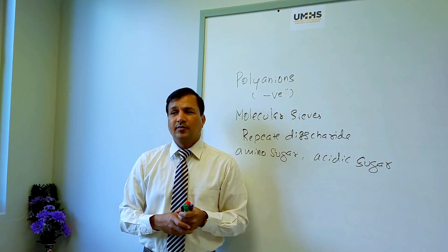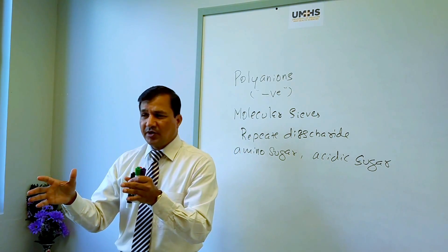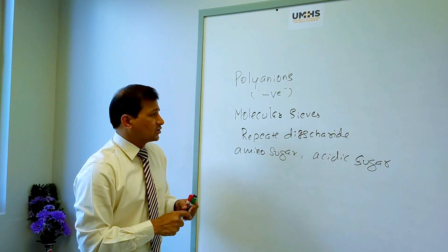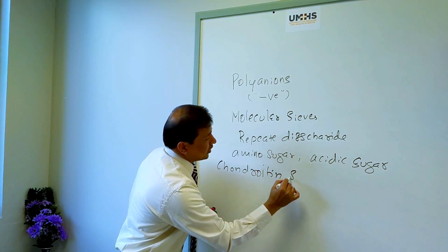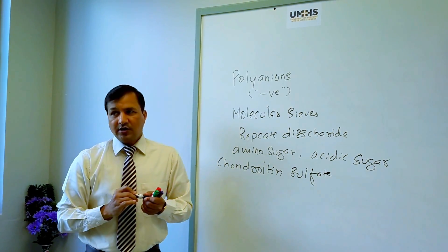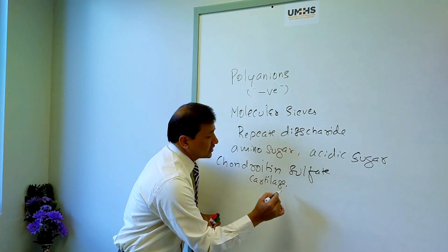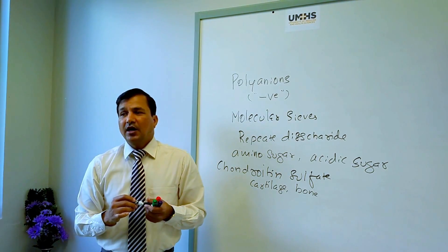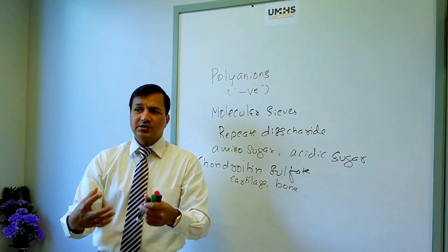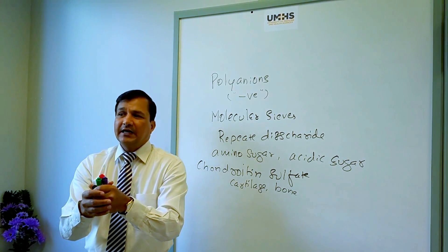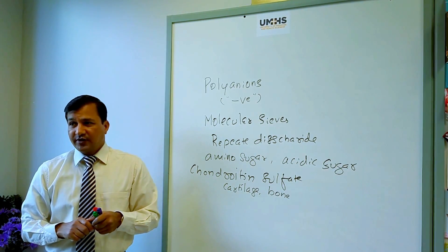The first glycosaminoglycan is chondroitin sulfate, found in the extracellular matrix, especially in cartilage — it is involved in cartilage and bone formation. The function of chondroitin sulfate is to hold on tightly to extracellular matrix proteins like collagen while they are being made, which is important during cartilage and bone formation.